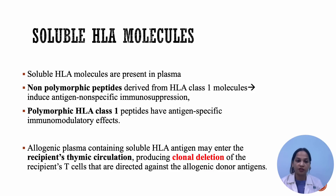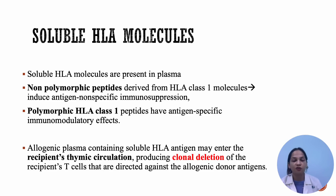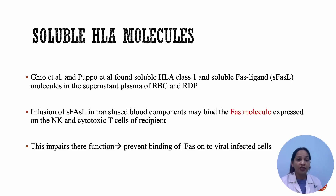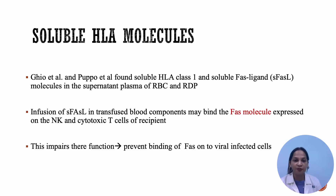The next mechanism involves soluble HLA molecules. Soluble HLA molecules are present in plasma of healthy donors. If these molecules are non-polymorphic peptides from class 1, they can induce antigen non-specific immunosuppression. If they are polymorphic HLA class 1, that can lead to an antigen-specific immunomodulatory effect. If allogeneic plasma containing soluble HLA enters the patient's thymic circulation, there will be clonal deletion of recipient T cells directed against allogeneic donor antigens, leading to immunosuppression. Additionally, Gio et al. and Pepo et al. found that along with soluble class 1 HLA, there are soluble FAS ligand molecules in the supernatant plasma of red cells and platelets. Infusion of soluble FAS ligand can bind to FAS molecules on natural killer cells and cytotoxic T cells, impairing their function and making the patient more prone to infections.